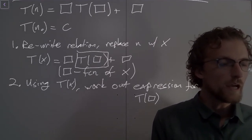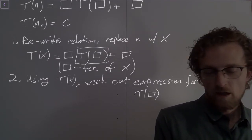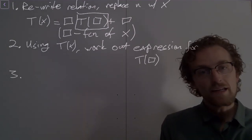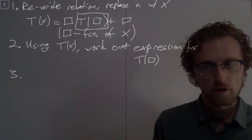Okay, so now we want to work out an expression for T(block). Once we have that, step 3: plug that back into the original recurrence relation.